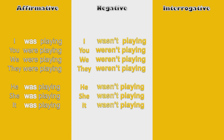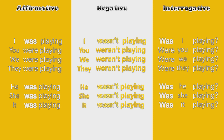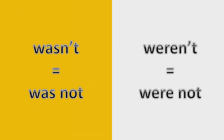And now the interrogative, which follows the normal rule when you change the word order: Was I playing? Were you playing? Were we playing? Were they playing? Was he playing? Was she playing? Was it playing? Also note that wasn't and weren't are simply was not and were not — both are correct, it's up to you which one you use.